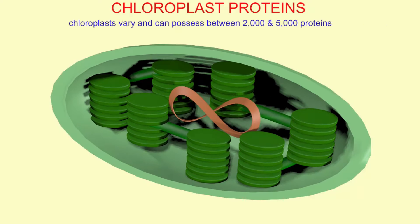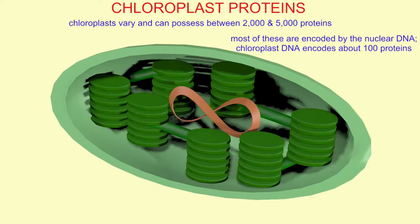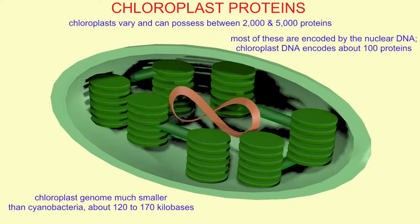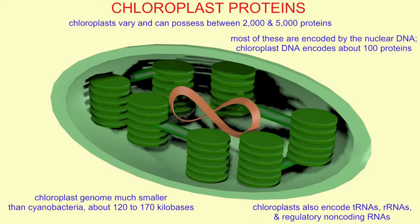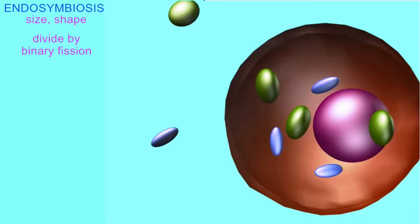While a chloroplast can possess between 2,000 and 5,000 proteins, they vary from one organism to another. Most of these genes are encoded by nuclear DNA. The chloroplast's DNA only encodes about 100 proteins. The chloroplast chromosome is much smaller than what would have been the genome of the ancestral cyanobacteria — only about 120,000 to 170,000 bases of DNA. This chloroplast chromosome also encodes tRNAs, rRNAs, and regulatory non-coding RNAs.